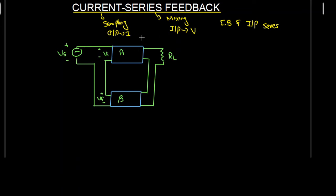The output signal is going to be current, denoted by I0, and this I0 is actually the same as IL. If IL is flowing in the load resistor RL, then I0 will be equal to IL. Now, A will be equal to output divided by input. The output is I0 and the input is VI because the input is voltage. So we have gain given by I0 divided by VI.